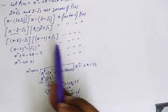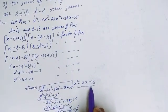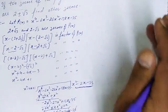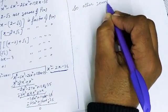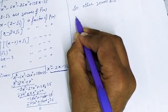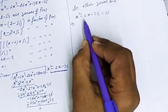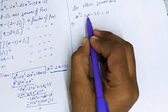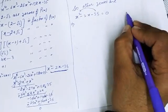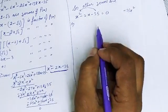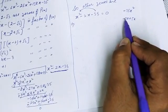We need to find the other two zeros. Two zeros, 2+√3 and 2-√3, came from x² - 4x + 1. The remaining two zeros will come from the quotient x² - 2x - 35. Setting x² - 2x - 35 = 0, we split the middle term: we need two numbers whose sum is -2x and whose product is -35x². Those are -7x and +5x.